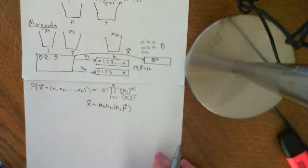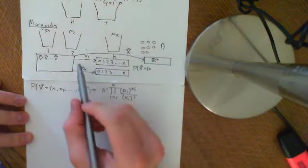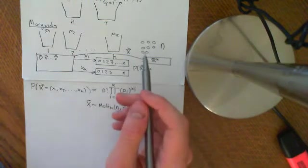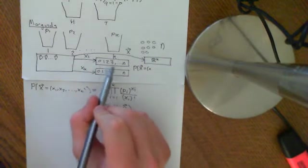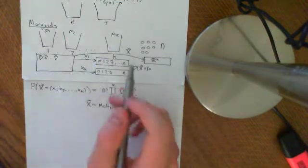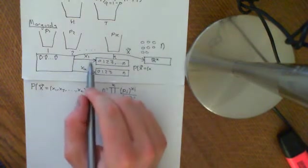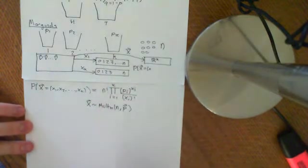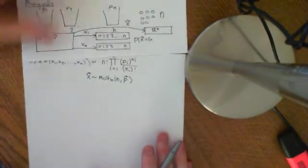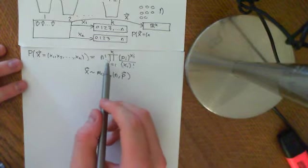When I say I want the marginals, what I mean is: forget the rest of these random variables. I just want to know what the probability distribution of x1 is, or what the probability distribution of x3 is. These are random variables, and you can ask what is the probability mass function of x1 for equaling some little value.